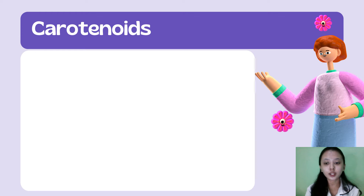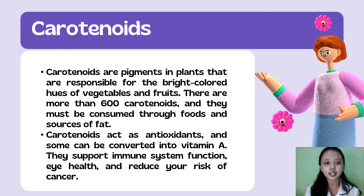Now we are going to discuss carotenoids. Carotenoids are pigments in plants that are responsible for the bright-colored hues of vegetables and fruits. There are more than 600 carotenoids and they must be consumed through foods and sources of fat. Carotenoids act as antioxidants and some can be converted into vitamin A. They support immune system function, eye health, and reduce our risk of cancer.